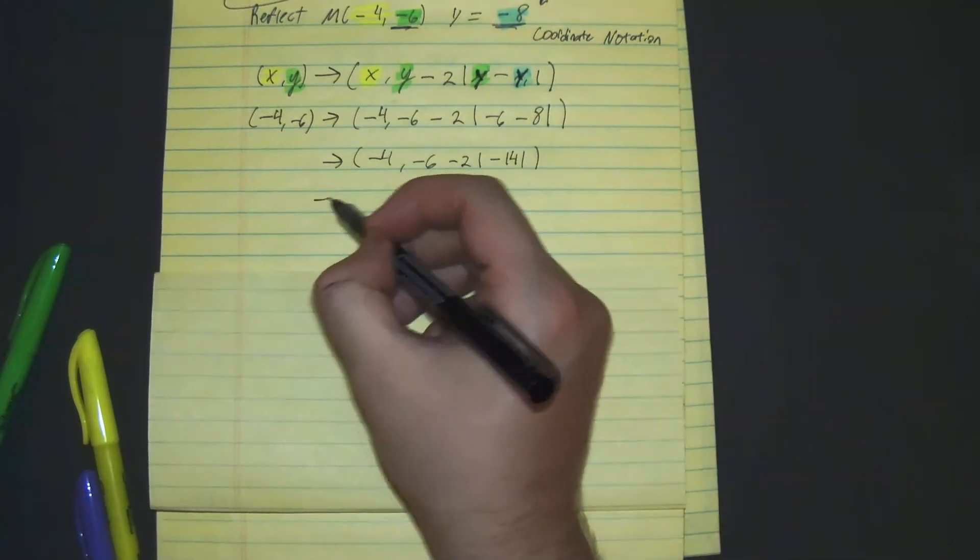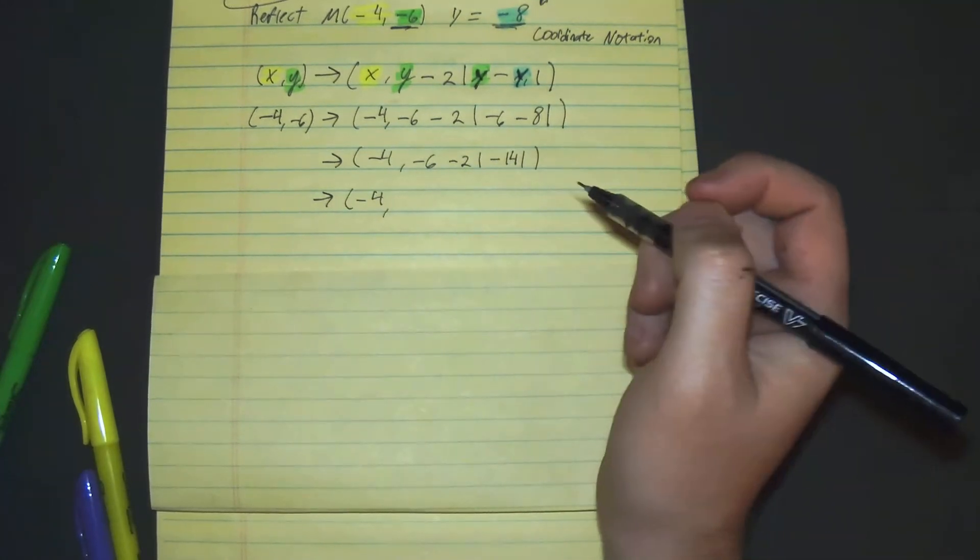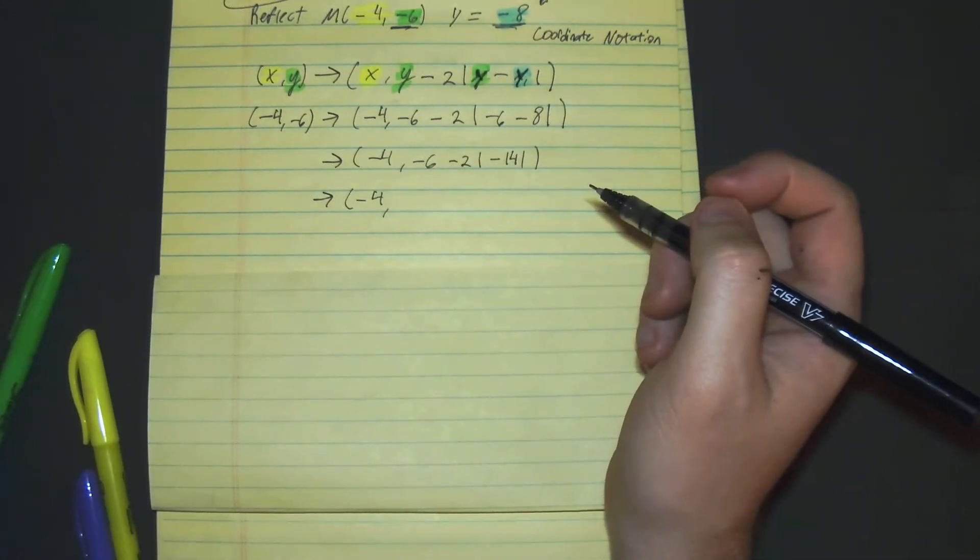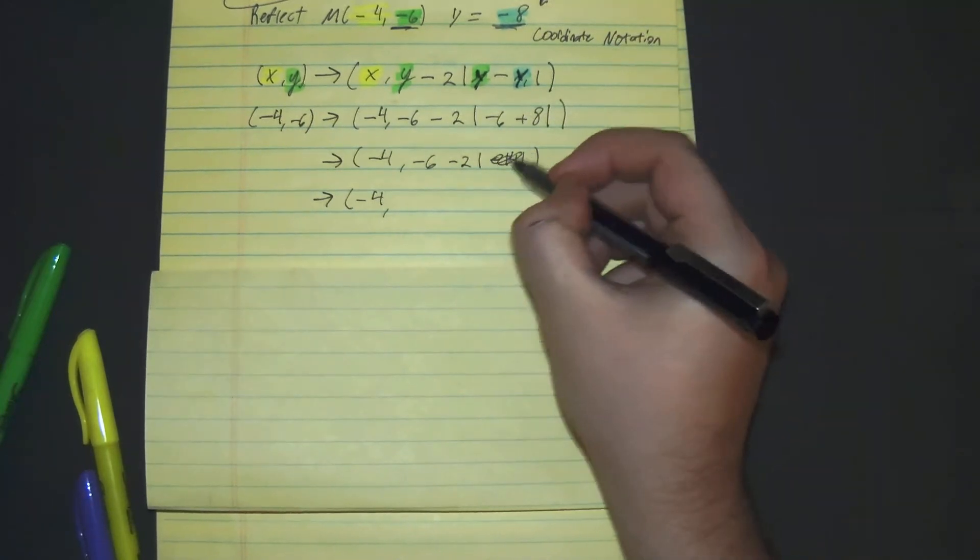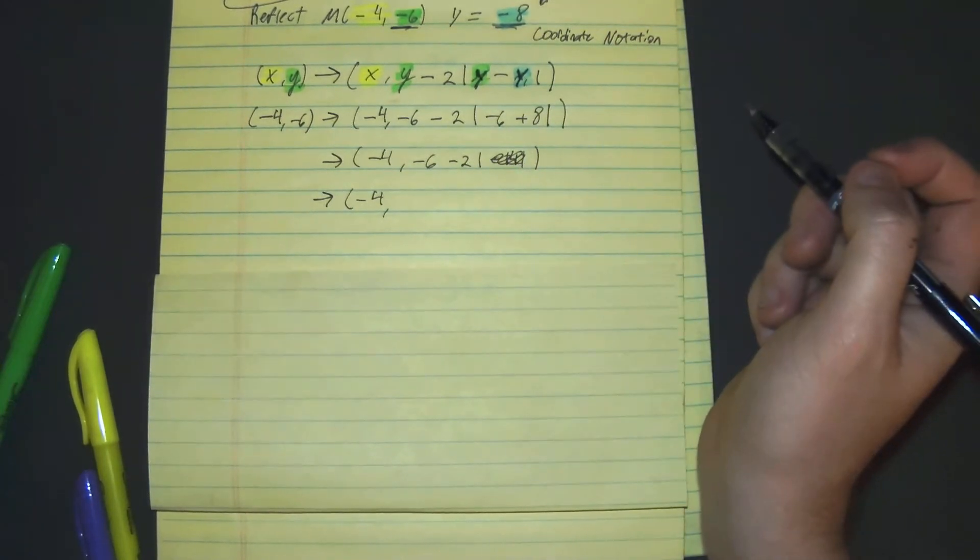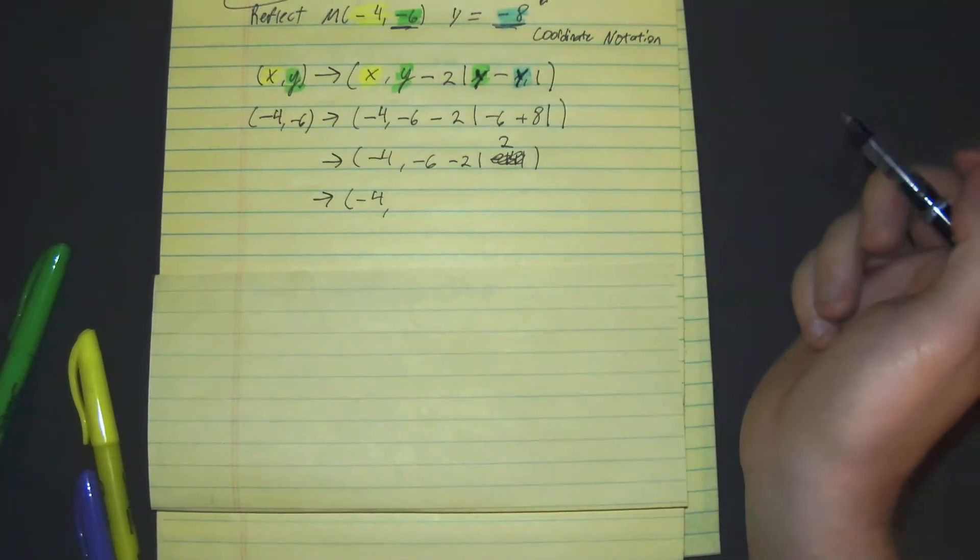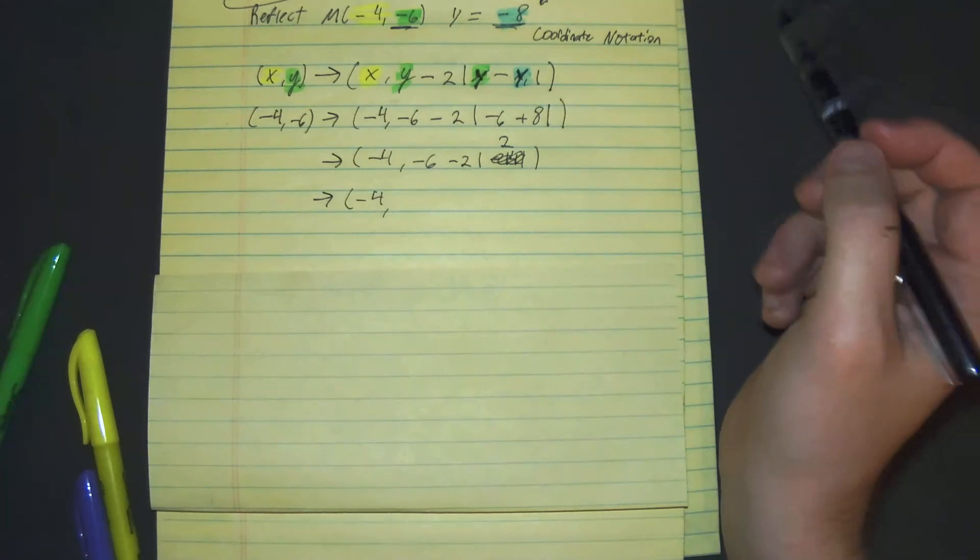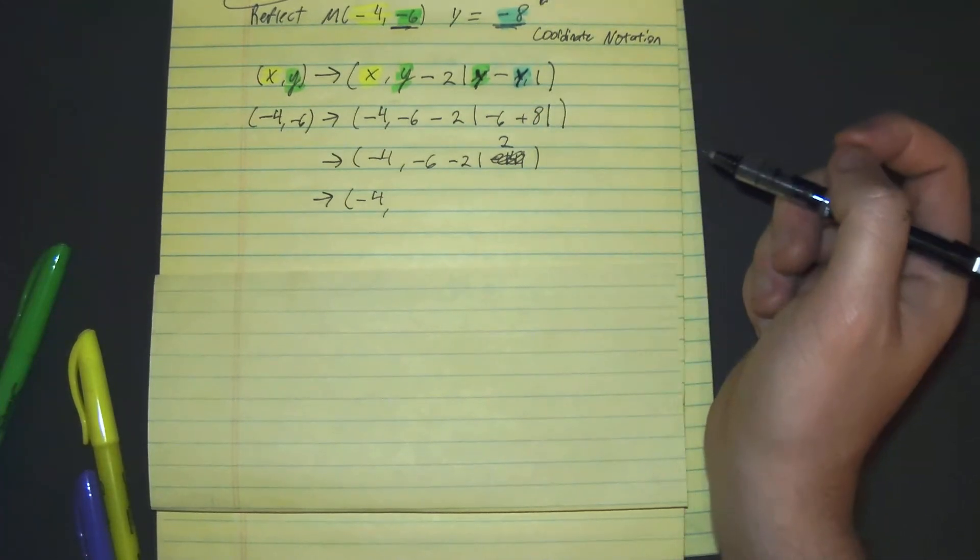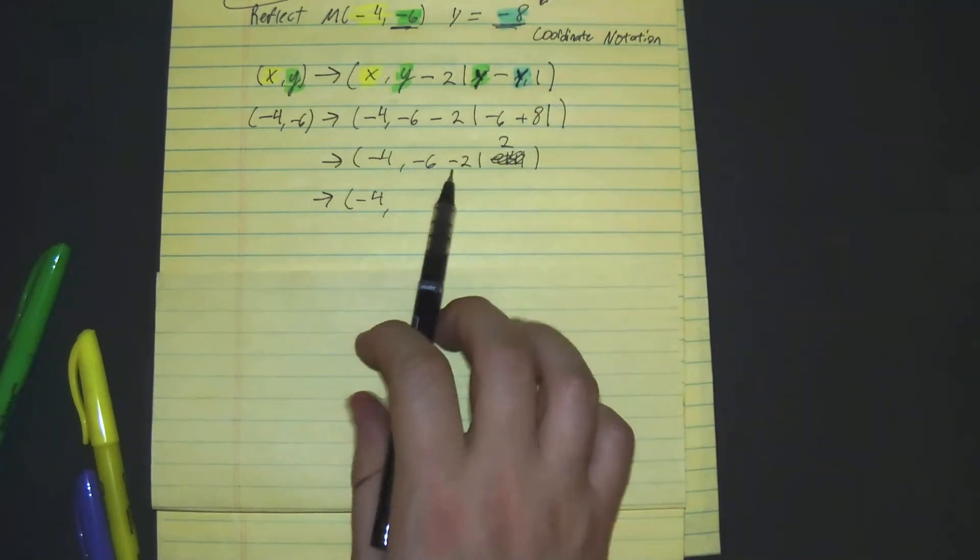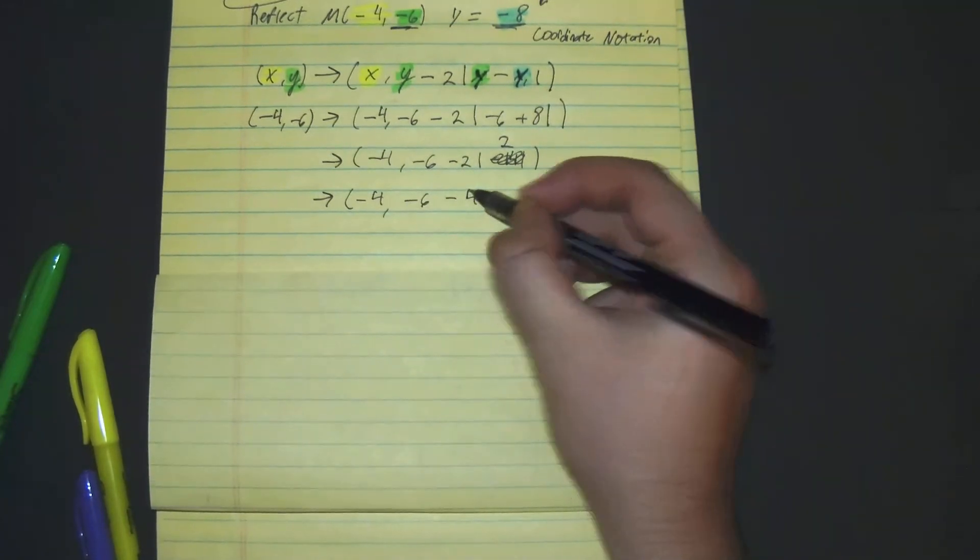Then from here, we get negative 4. Negative 8, negative 8. Oh, this becomes a plus. Oops, that's my mistake. So negative 6 plus 8 would give us a 2 actually because a negative minus minus would become a positive. So we get 2. So negative 6 minus 2 times 2 would give us minus 6 minus 4.